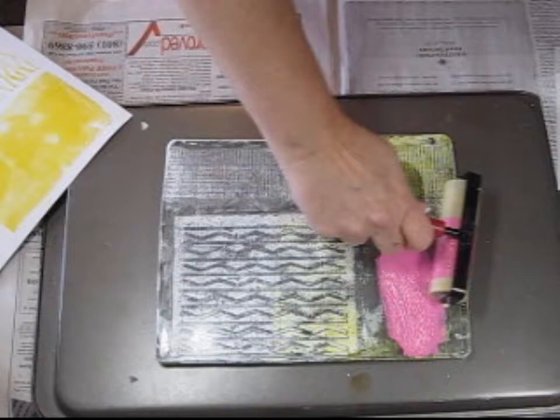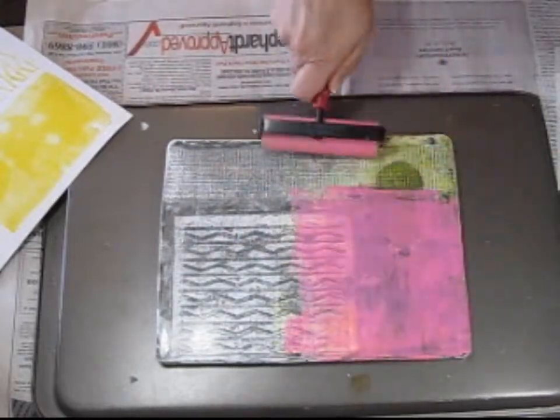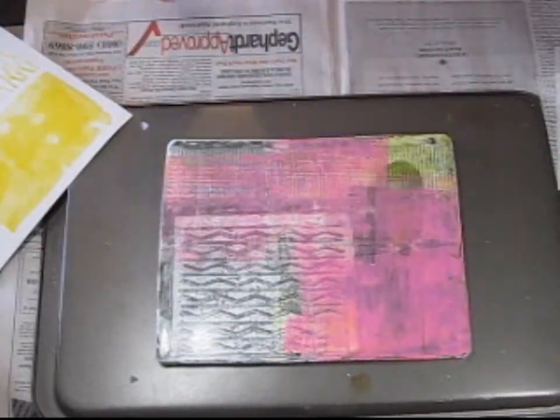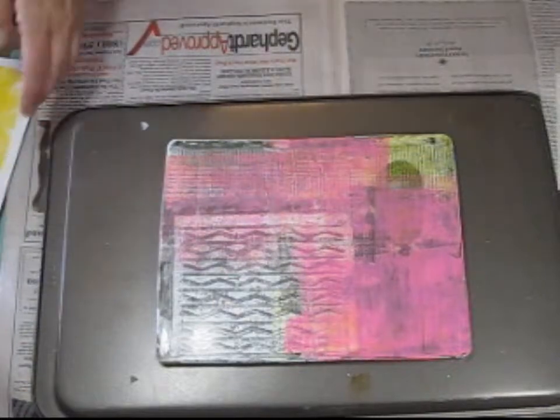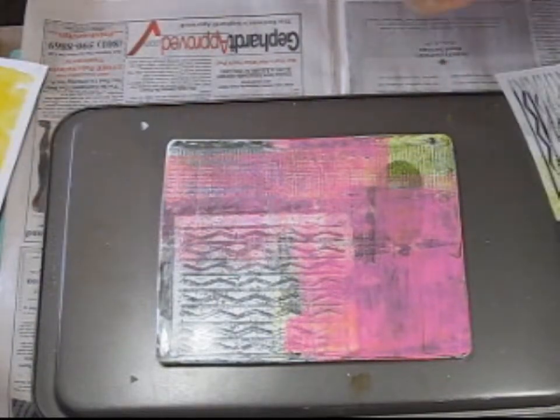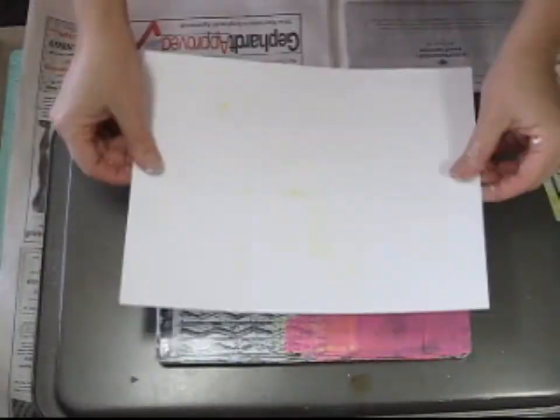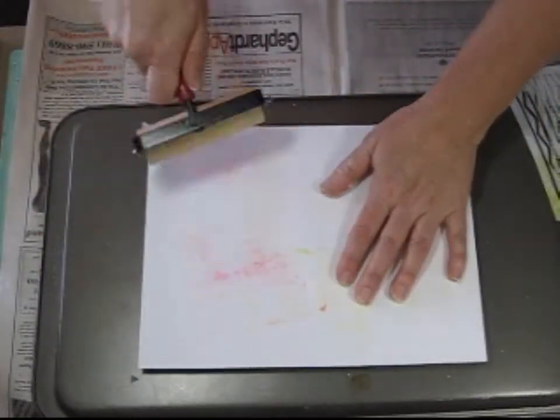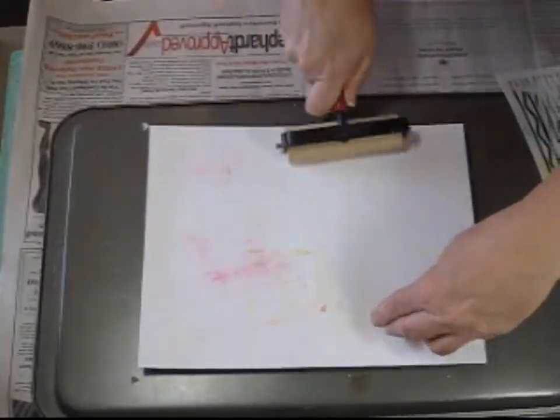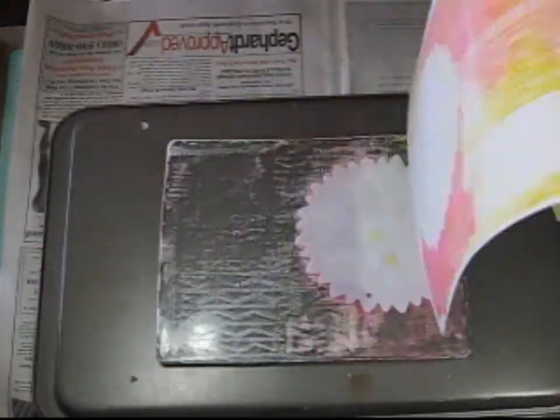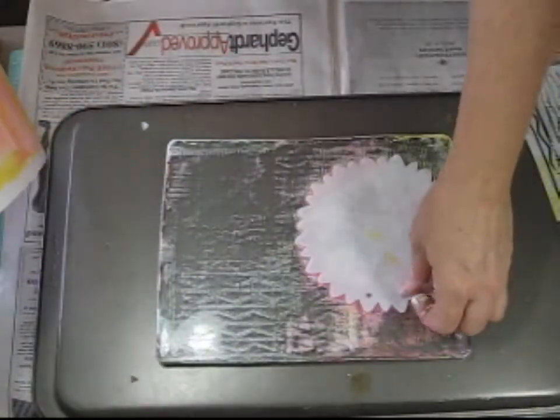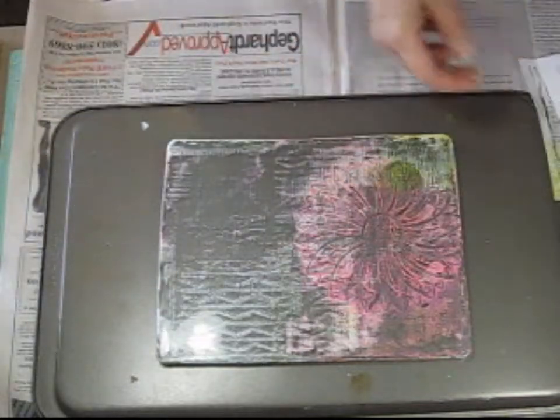So I'm going to just add to the pattern that's already on there from the stencil from the previous print. And I'm going to add some pink and put some more impressions into the jelly plate.